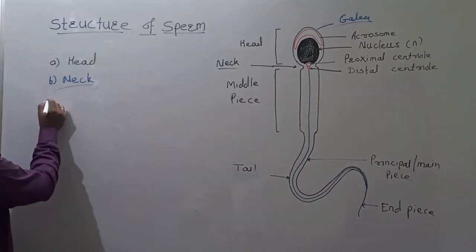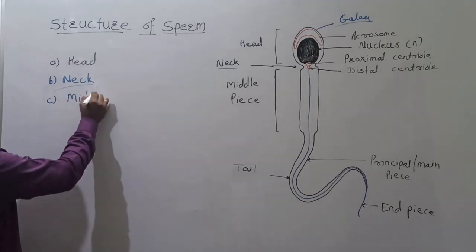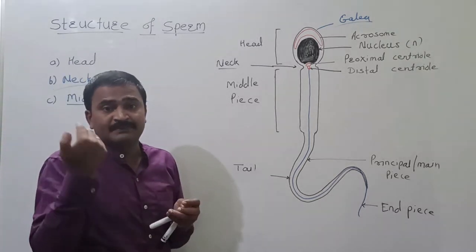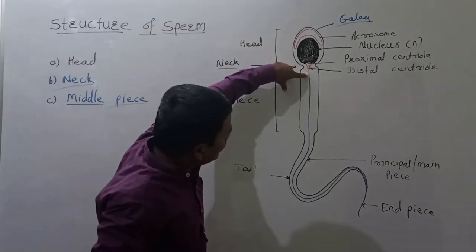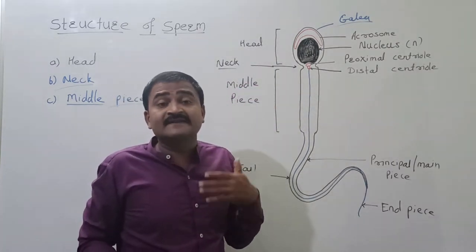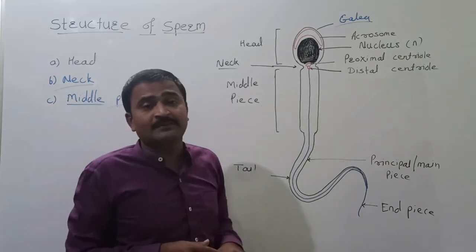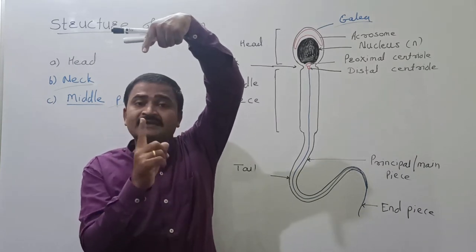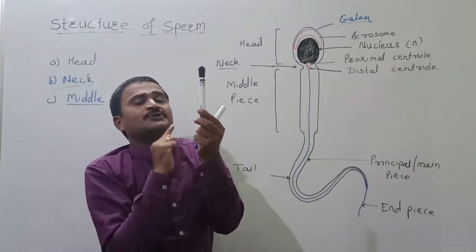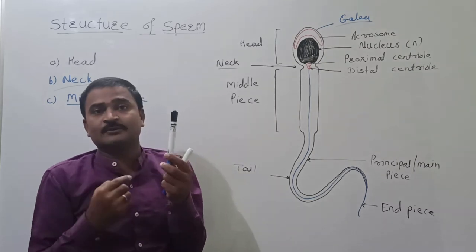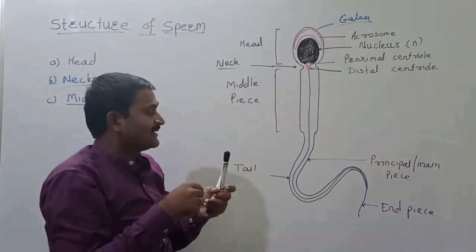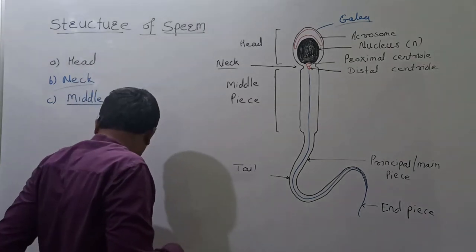The third portion in the sperm structure is called the middle piece. The middle piece is a little broad portion. This middle piece contains a centrally located axial filament. This axial filament is surrounded by spirally coiled mitochondria. There are about 10 to 14 spiral turns of mitochondria arranged around the axial filament.